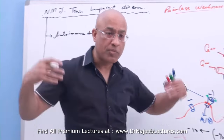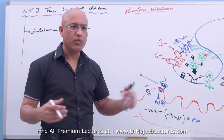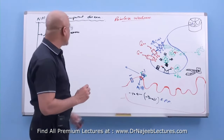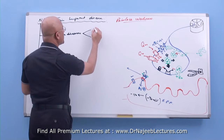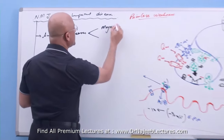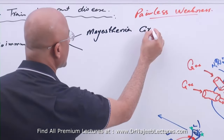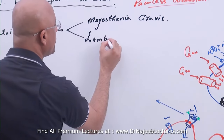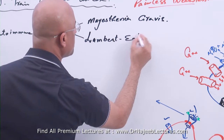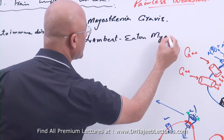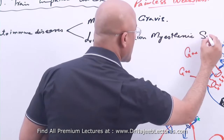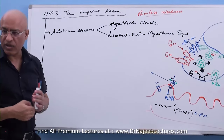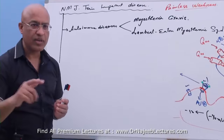Your own immune system produces autoantibodies which interfere with the function of the neuromuscular junction. Classically, these are two diseases. Number one is Myasthenia Gravis — myasthenia means weakness — and the other is Lambert-Eaton Myasthenic Syndrome. In both conditions, autoantibodies are produced against components of the neuromuscular junction and impair neuromuscular transmission.